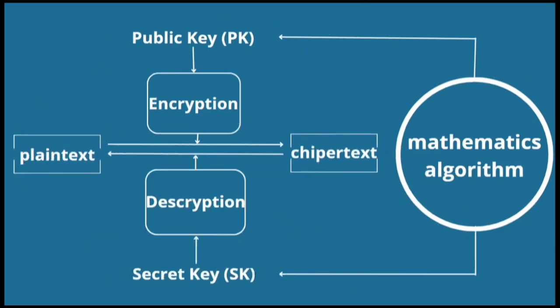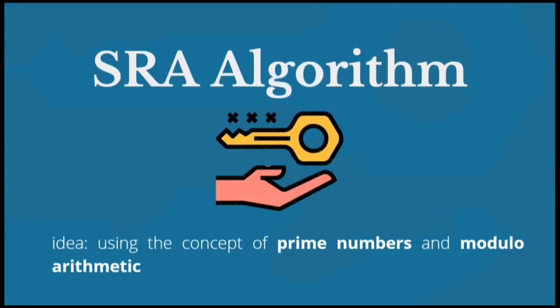In this modern era, cryptography has used many mathematical algorithms to convert plaintext into ciphertext, or vice versa. Plaintext is the original text or message with meaning, while ciphertext is plaintext that has been encrypted and is meaningless. I will introduce one of the algorithms often used in cryptography — this algorithm is known as the RSA algorithm. In the process of encryption and decryption, RSA applies the concept of prime numbers and modulo arithmetic as the basis of the algorithm.